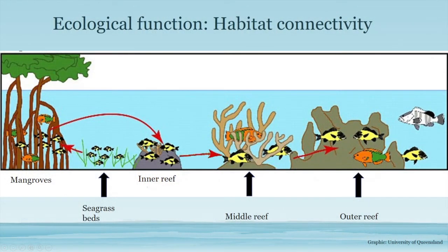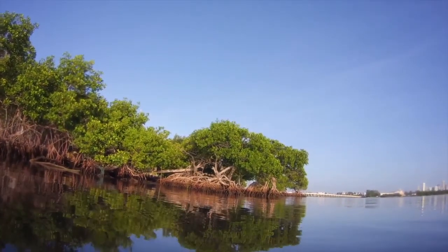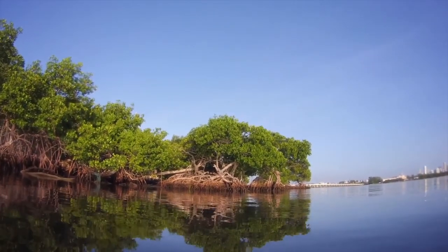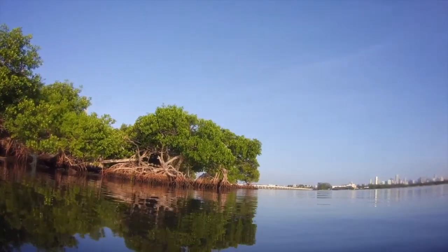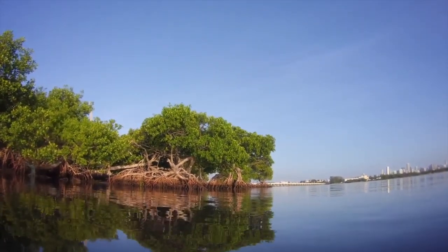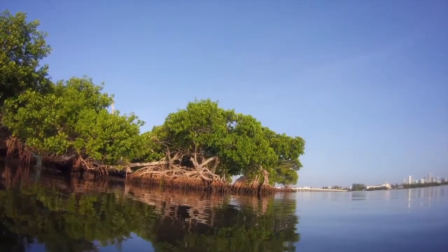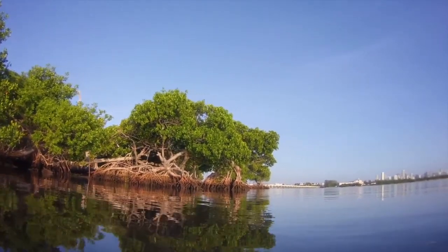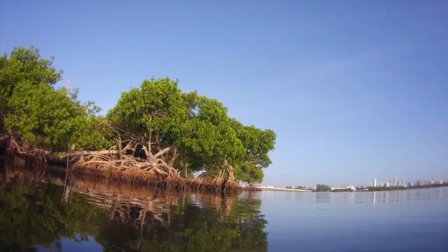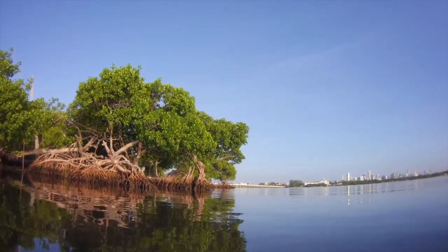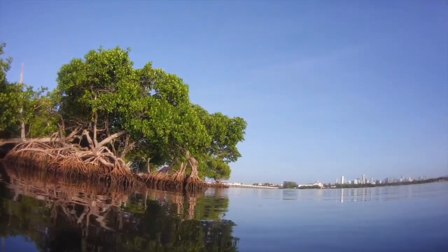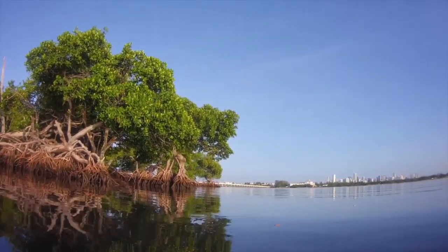Here in southeast Florida, mangroves are part of an interconnected ecosystem. Their productivity and health are closely linked to nearby coastal habitats, including estuarine areas where fresh and saltwater meet, seagrass beds, nearshore hardbottom, and coral reefs. They also provide food for marine species including oysters, shrimp, snook, snapper, tarpon, jack, sheepshead, and red drum.